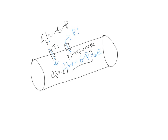There is also a T3 transporter that transports glucose out of the ER lumen into the cytoplasm. So T1, T2, and T3 transporters handle the transport of glucose-6-phosphate, inorganic phosphate, and glucose respectively.